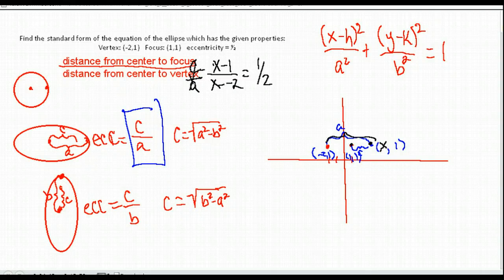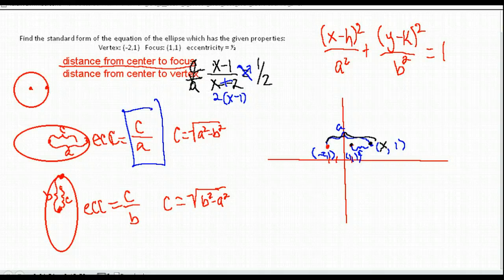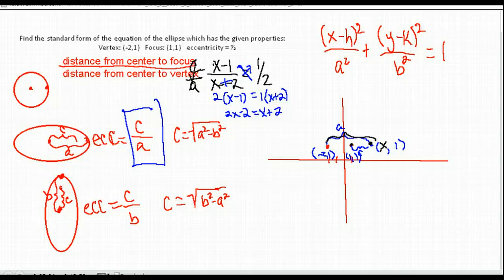We solve for the x-value of our center. Cross-multiplying gives 2(x − 1) = 1(x + 2), so 2x − 2 = x + 2, and solving that we get x equals 4.